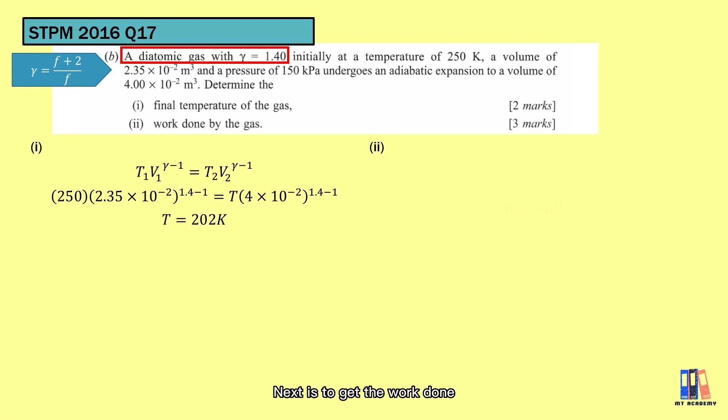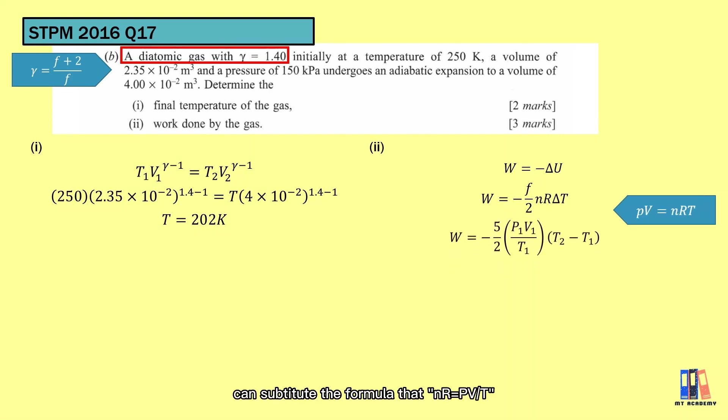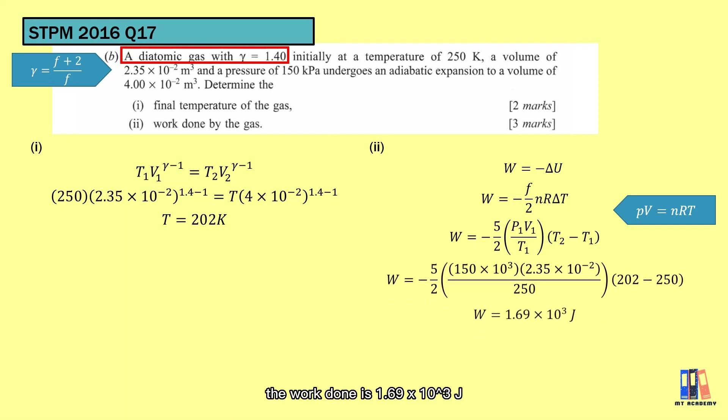Next is to get the work done. If you want to use the same formula as previous question, you will need to get the final pressure before you apply the formula. Alternative solution is to use the formula from chapter 9 that change in internal energy is equal to F over 2 nR delta T. For the number of moles, you can substitute the formula that nR is equal to PV over T. Put in the values. The work done is 1.69 times 10 to the power of 3 joules.